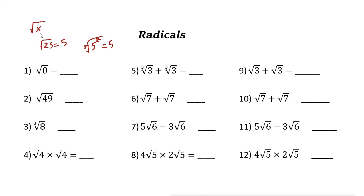Now if you have x, it is actually x to the power of 1, and that is the second root — the square root of x. You can write it as x to the power of one half. So radicals can be written as exponents. Any radical that you have, you can write it as an exponent.